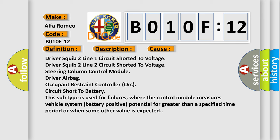This subtype is used for failures where the control module measures vehicle system battery positive potential for greater than a specified time period or when some other value is expected.